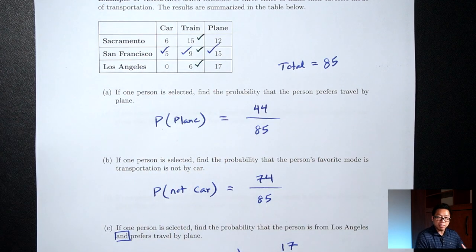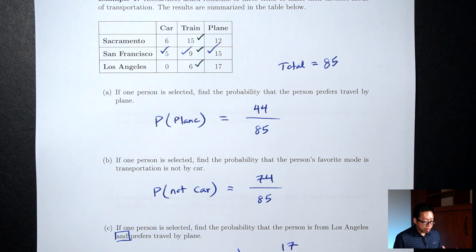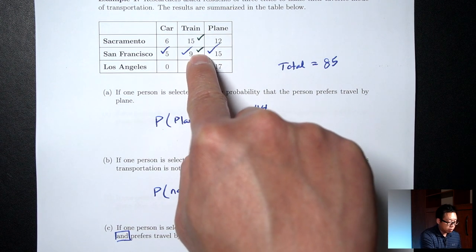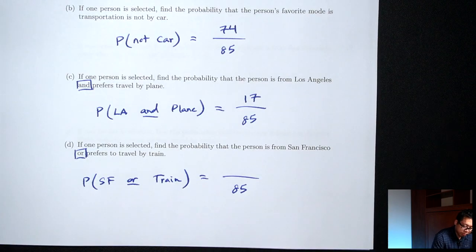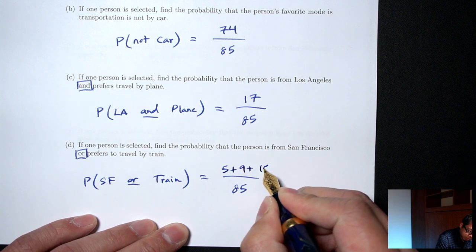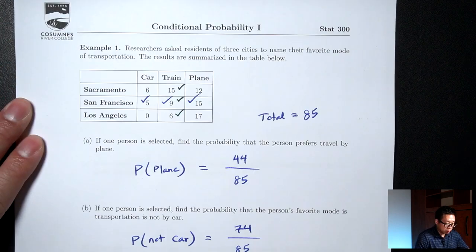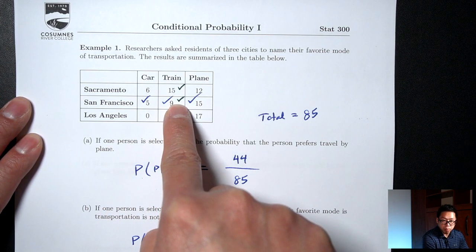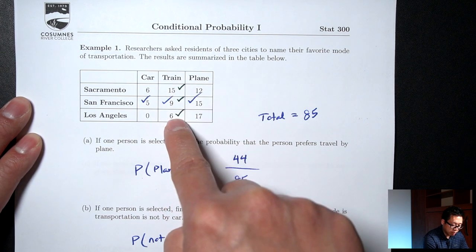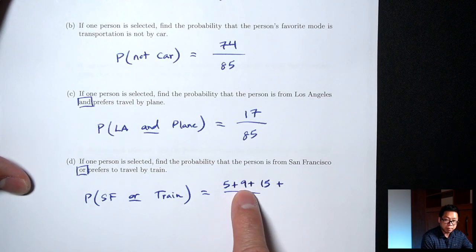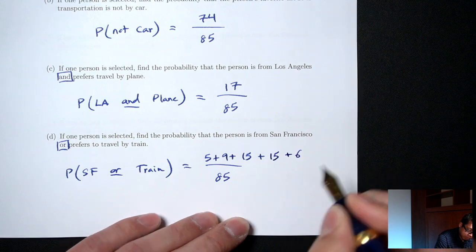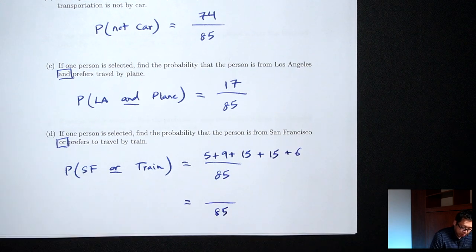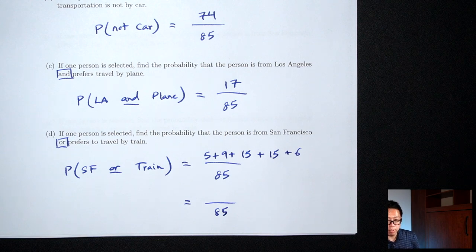So basically I'm taking all my San Francisco numbers and combining them with all the train numbers, but being careful not to count the 9 twice. The San Francisco numbers are 5, 9, 15; then I add on only the 15 and 6 from train, since the 9 was already counted. So the top is 5 plus 9 plus 15 plus 15 plus 6, which equals 50. The bottom is 85.